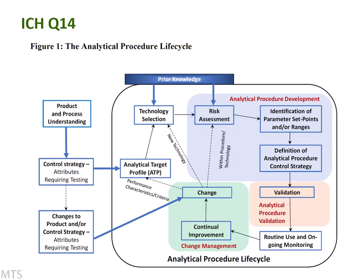After validation, the method is ready to put into routine use, such as in a QC environment. Ongoing monitoring is not currently a GMP requirement, but it's a matter of time before it becomes one. Monitoring methods provides feedback loops to see if the method is performing as expected, and feeds into the change management box — specifically continual improvement. Without trending and monitoring, it's harder to identify opportunities for continual improvement.